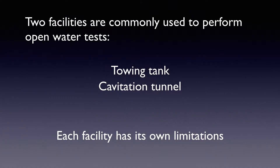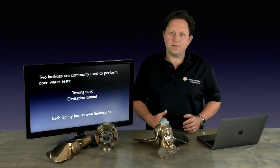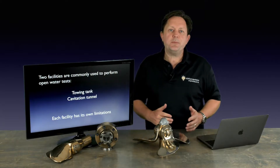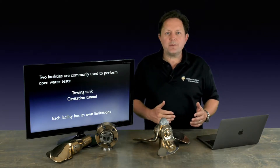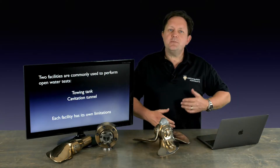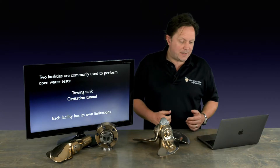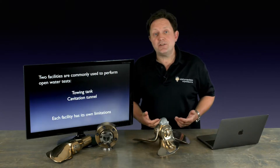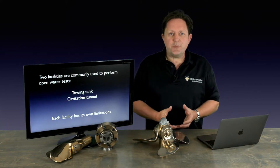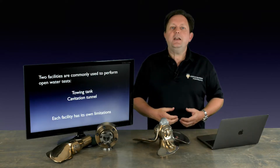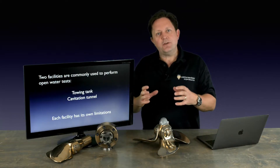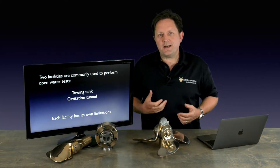One is a towing tank, and the other one is a cavitation tunnel. The towing tank is effectively a long, thin swimming pool where we can control all the parameters, and we can tow ships and propellers up and down it to measure their performance. The other facility, which I'm more familiar with, is a cavitation tunnel. This is effectively like a wind tunnel — it's a big circle of water, and you can push it around at different speeds, and then when you put a propeller in this flow, you can measure its performance characteristics.